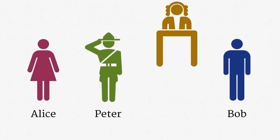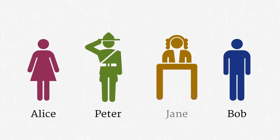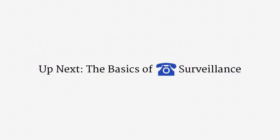Our final character is a judge, who we'll call Jane. I'd suggest Judy, but I don't want to get sued. Judge Jane is going to serve as an independent check on Peter. Before he can access Alice's or Bob's data, he sometimes needs to get Jane's permission. So there's our starting lineup. We're going to see these characters a lot in the coming lectures. This part of the course is going to use the cast of characters to work through the basics of phone surveillance.